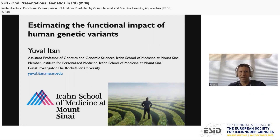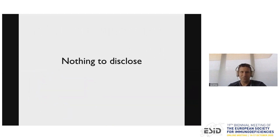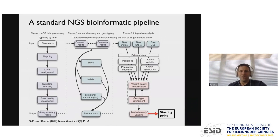Hello everyone, my name is Yuval Itan, and I will be talking today about estimating the functional impact of human genetic variants. I have nothing to disclose, no conflict of interest. This is a very standard bioinformatic pipeline of whole genome and whole exome sequencing, where we start with raw reads, do the alignment, some quality control, and then end up with annotated genetic variants in patients, where we try to estimate which variants and genes are disease-causing.